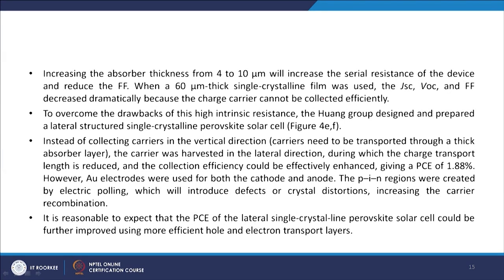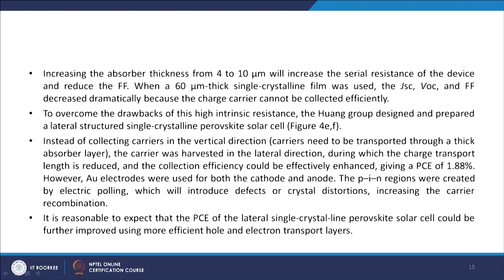The gold electrodes were used for both cathode and anode, and PIN regions were created by electric poling, which introduces defects or crystal distortion increasing carrier recombination. When both sides use gold electrodes there is nothing to extract charge carriers, which is why electric poling was done. It is reasonable to expect that the PCE of the lateral single crystalline perovskite solar cell could be further improved using more efficient hole and electron transport layers.